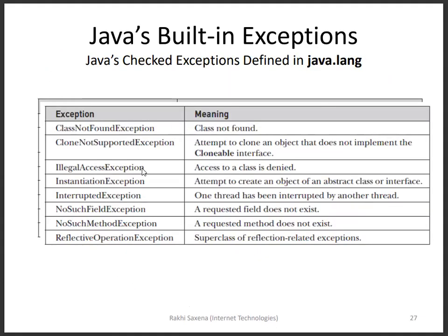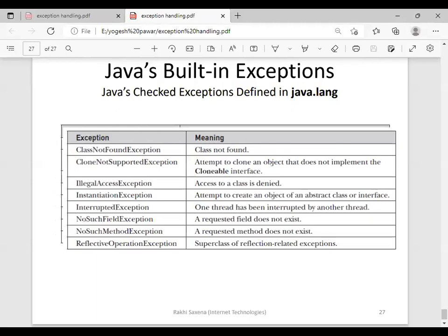Similarly, there are checked exceptions — eight of them: ClassNotFoundException, CloneNotSupportedException, IllegalAccessException, InstantiationException, InterruptedException, NoSuchFieldException, NoSuchMethodException. Checked exceptions are handled by the system itself, while unchecked exceptions are considered based on our requirement.